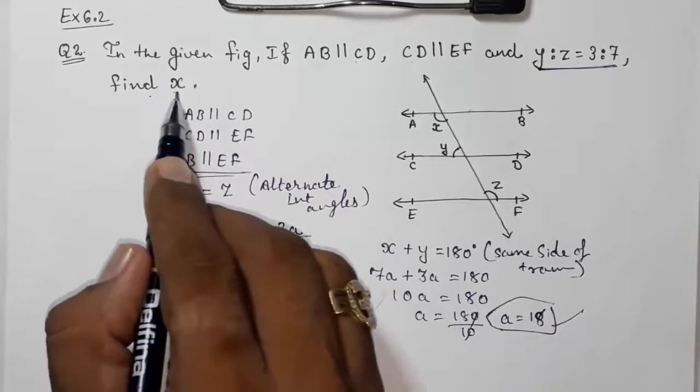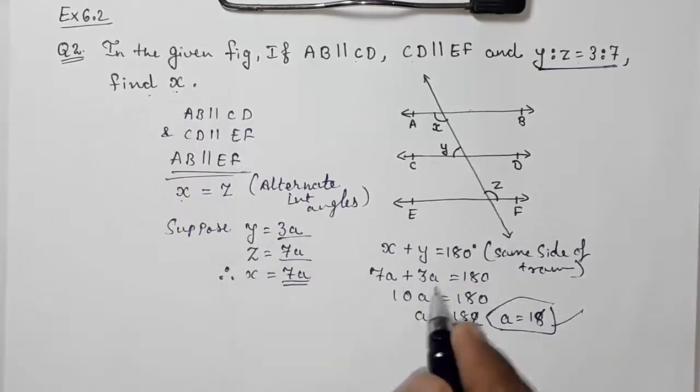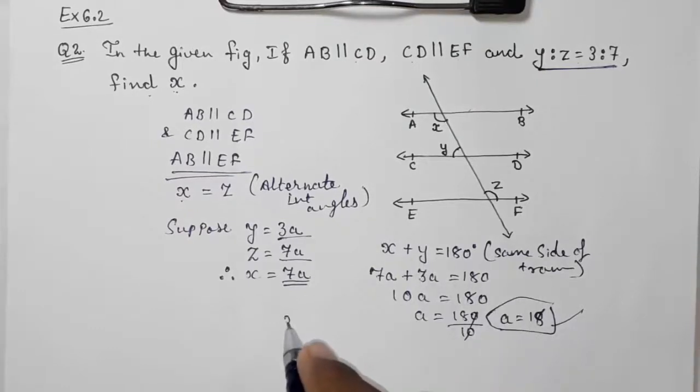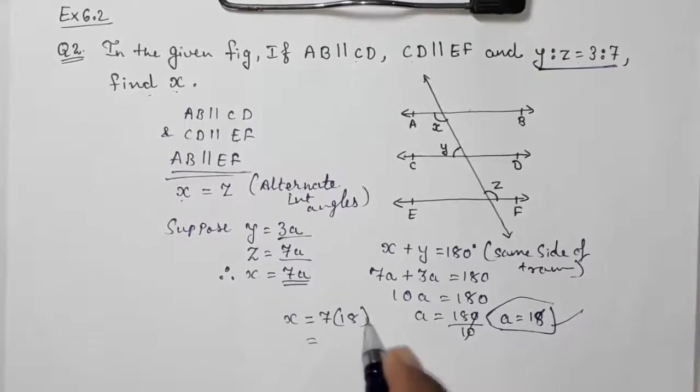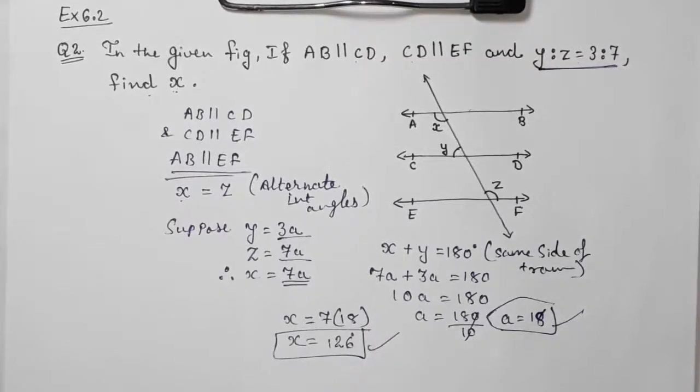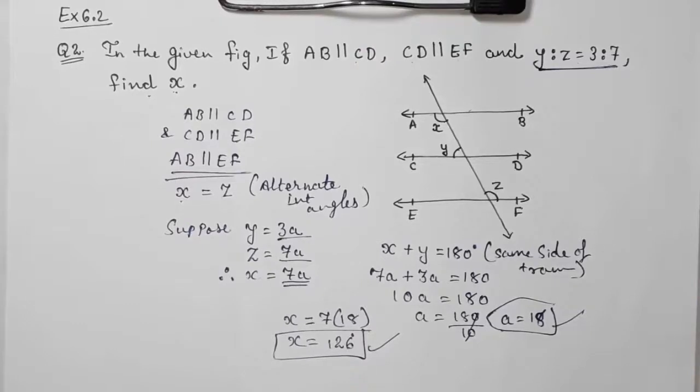Now we got that A is 18, but we don't want A, we want to find X. So X is equal to 7A, X is equal to 7 into 18, therefore X equals 126. X is equal to 126 degrees.